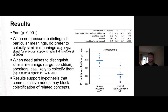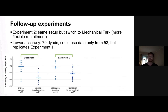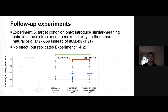These results support the hypothesis that communicative need may block co-lexification of related concepts. But we weren't quite satisfied with one result, so we self-replicated the experiment. The first experiment used a student sample, but since it was the middle of a pandemic we switched to Mechanical Turk, which provides more flexible recruitment but also much more noise — Mechanical Turk workers often just press random buttons. But the result does replicate. We ran two more experiments: the third made it even easier to co-lexify distractor pairs — we thought it would give a stronger effect, but it didn't make a difference, and still replicates the baseline vs. target condition difference.